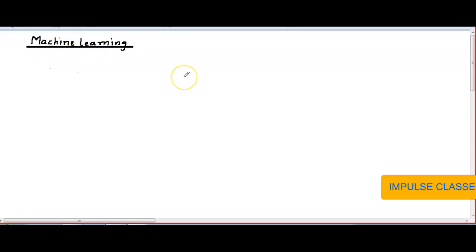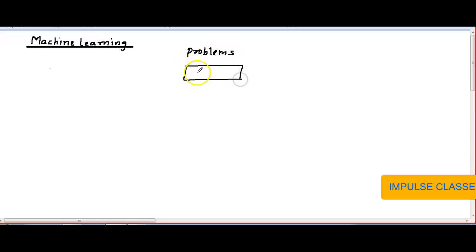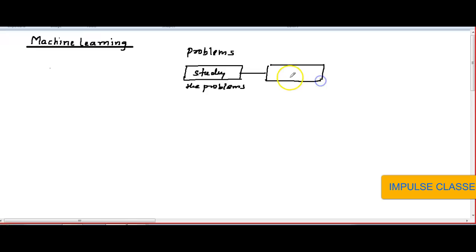So, what is machine learning first? Consider if you are writing any programs, like what you have done in C++, Java and all. What we are doing there, if any problem is there, we have to study the problems, we analyze the problems. Then we have written the algorithm, your rules, and then finally we have evaluated and launched it.